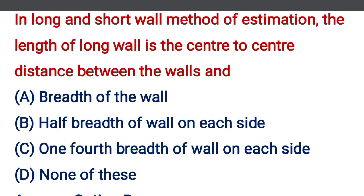In the long and short wall method of estimation, the length of the long wall is center to center distance between the wall and — option A: breadth of the wall, option B: half breadth of wall on each side, option C: one-fourth breadth of the wall on each side, option D: none of the above. The correct answer is option B, half breadth of the wall on each side.